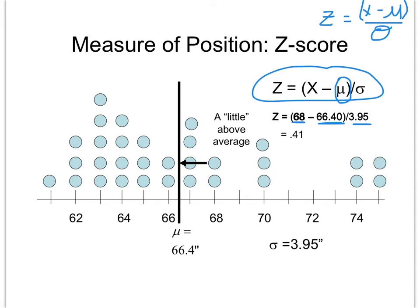In this situation, we want to know what this data point has for a z-score. We plugged 68 into our equation, subtracted the mean (our mu), and divided by our standard deviation of 3.95. When we did that, we got a z-score equaling 41 hundredths or 0.41.